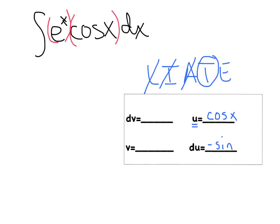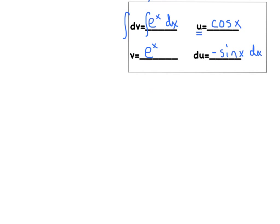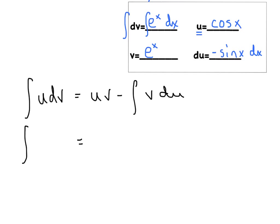The derivative of cosine is negative sine of x dx. By default, what's left over is e to the x dx, whose integral is conveniently e to the x — that's our v. Plugging into the formula, the integral of u dv equals uv minus the integral of v du, so our problem gives us e to the x cosine of x minus the integral of v du. Pull out the negative sign.